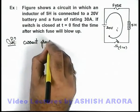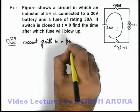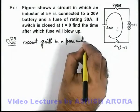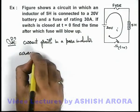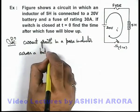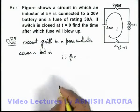We've already studied in previous section that current growth in a pure inductor across a battery is, this can be written as e by l multiplied by time.